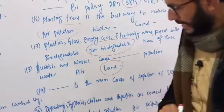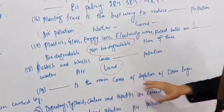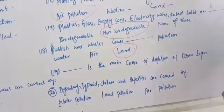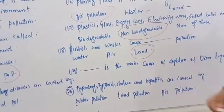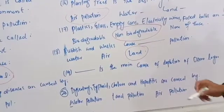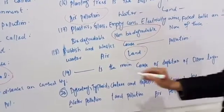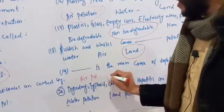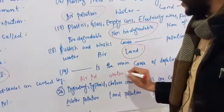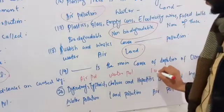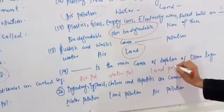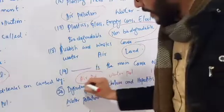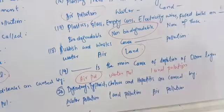The main cause of the depletion of the ozone layer is air pollution. The ozone layer is associated with air pollution, and air pollution plays a major role in its depletion.